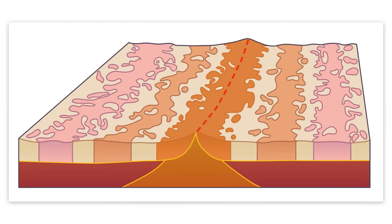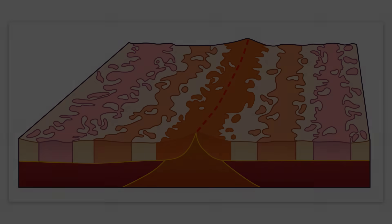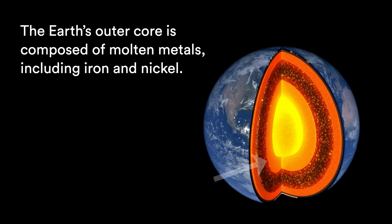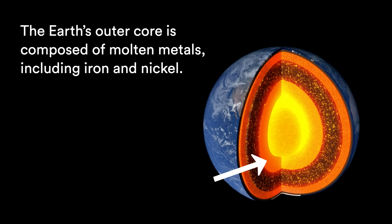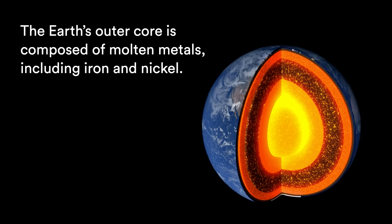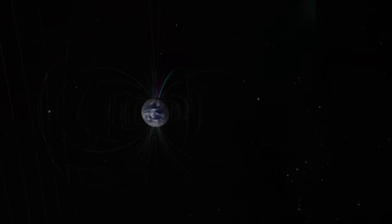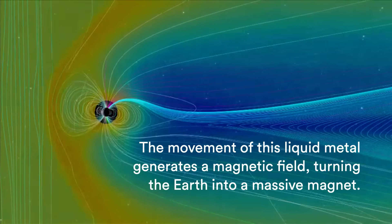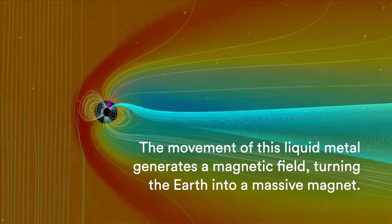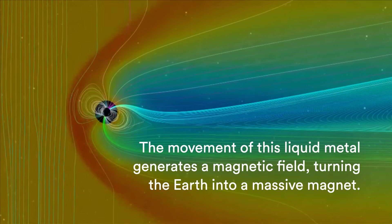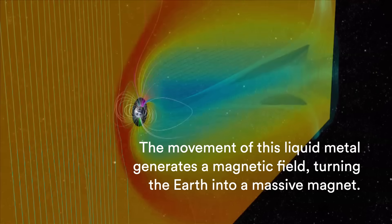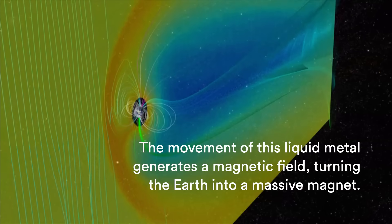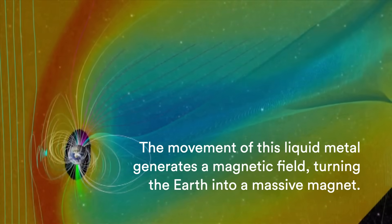In order to really understand this, we need to step back and look at the inside of the Earth. The inside of the Earth is made up of different layers, and one of those layers — the outer core — is composed of molten metals, including iron and nickel. Those molten liquid metals are not sitting still, but rather they are flowing around the inner core, and the movement of that liquid metal generates a magnetic field, which essentially turns the Earth into one gigantic magnet. Just like a magnet that you would play with, it has both a north and a south pole that behave a little bit differently and are detectable.